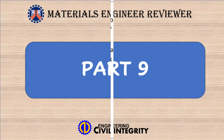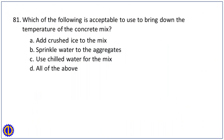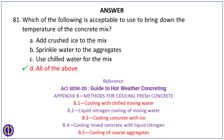Part 9, Question 81. Which of the following is acceptable to use to bring down the temperature of the concrete mix? A. Add crushed ice to the mix. B. Sprinkle water to the aggregates. C. Use chilled water for the mix. D. All of the above.